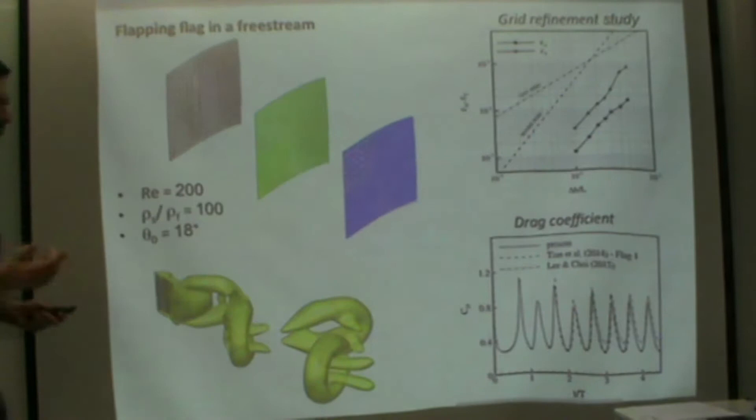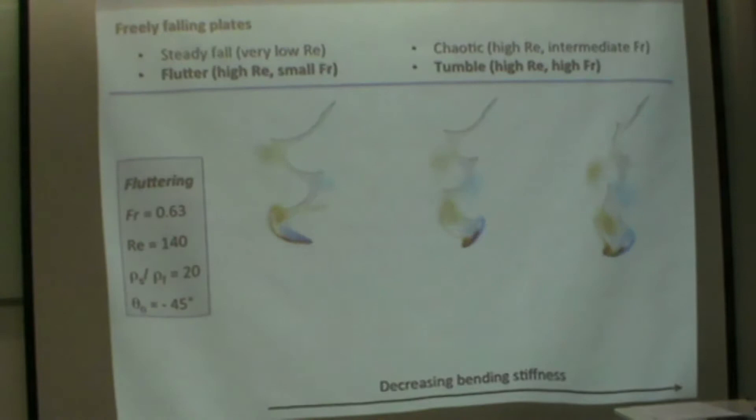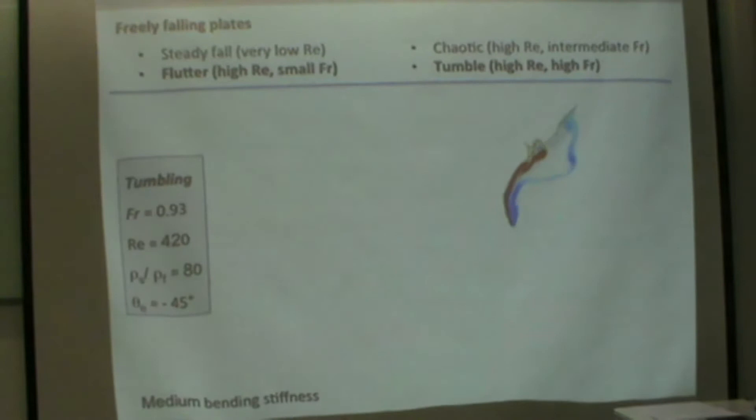Let me go fast about applications. This is an example of deformable plates falling under gravity. I'm showing the out-of-plane vorticity contours, decreasing the bending stiffness. We have the fluttering behavior with this combination of Froude and Reynolds number, but we can also have tumbling behavior, well captured by the code. This is a medium bending stiffness problem.